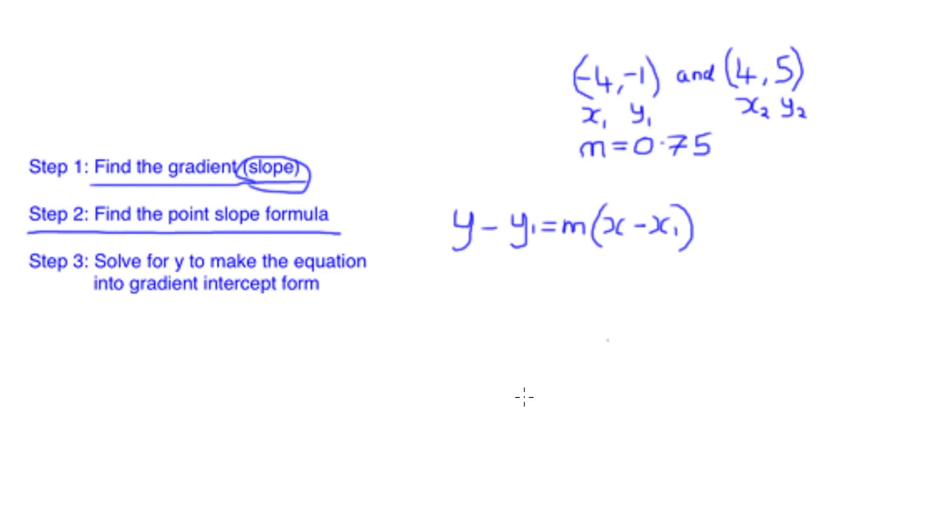All we need to do now is substitute in the values that we already know. So our y1, which we know is -1, our m which we know now is 0.75, and our x1 which we know is -4. Let's write that equation out substituting in the values we do know: y minus, don't forget our brackets, -1, equals 0.75 which is our slope, and again open our brackets, x minus, and in brackets again because it's a minus, -4.